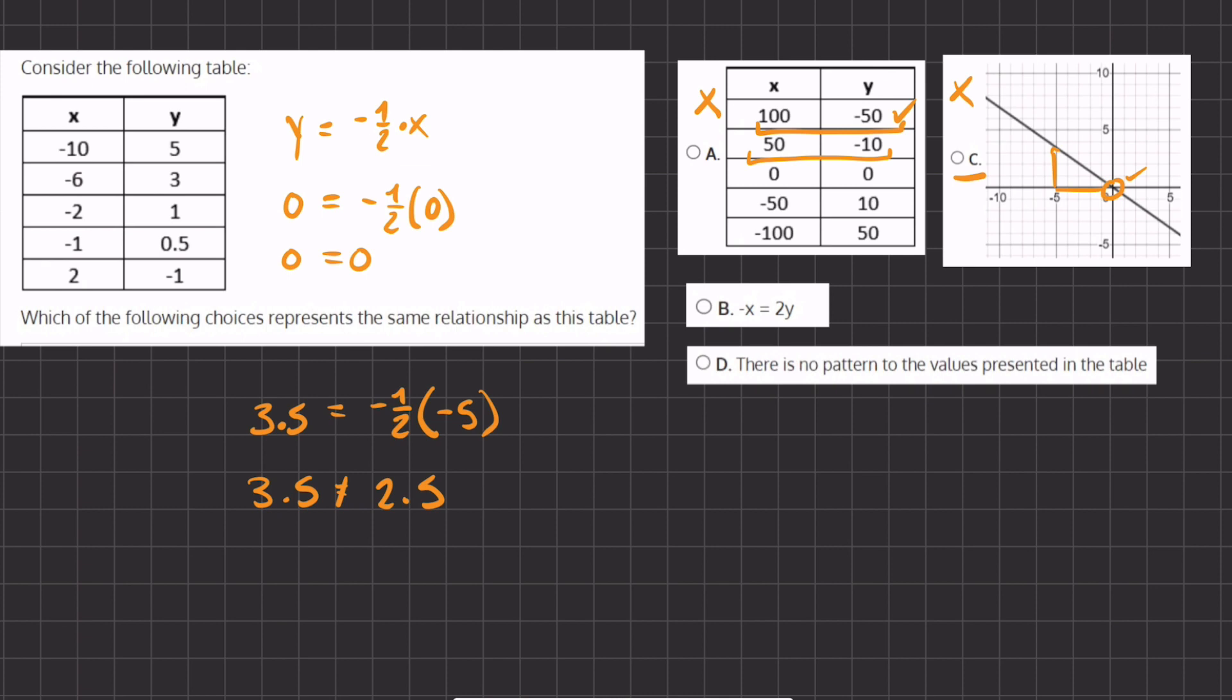Alright, so now let's check answer B. We have negative x equals 2y. Now let's try to take our formula here and manipulate it and see if it can also equal this formula that is given for B.